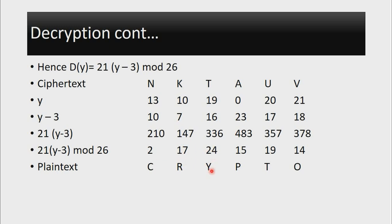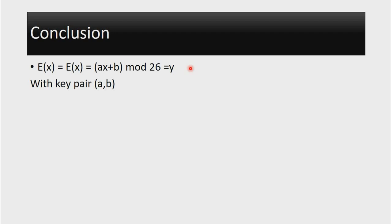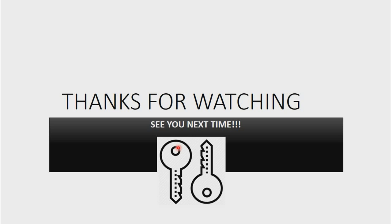When we decrypt the ciphertext NKTAUV, we are able to get back to our original plaintext message, which is 'crypto'. This confirms that the decryption algorithm is correct. So in conclusion: when encrypting X, the formula is AX + B mod 26, which gives us the ciphertext element, and A and B are two integers forming the key pair. The decryption algorithm is A⁻¹(Y - B) mod 26. That is the Affine Cipher. If you enjoyed the video, please like and subscribe to see more cryptography videos. See you next time!